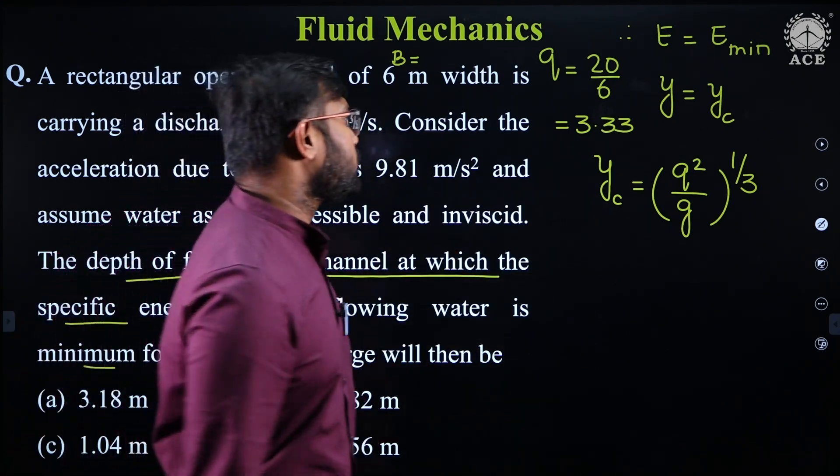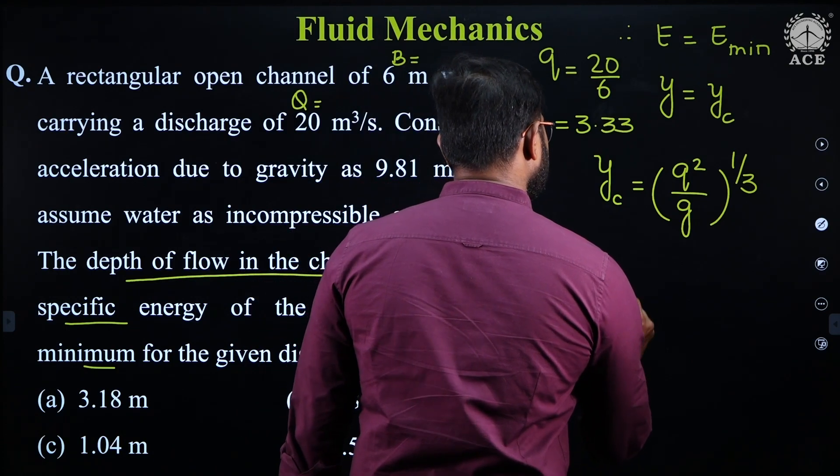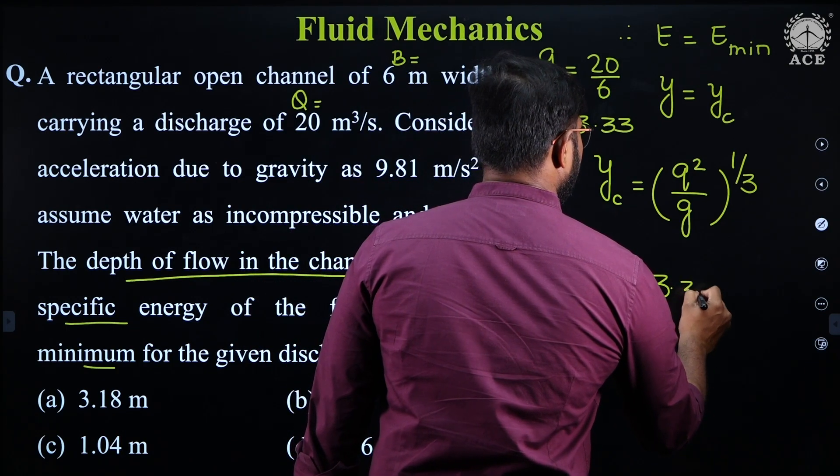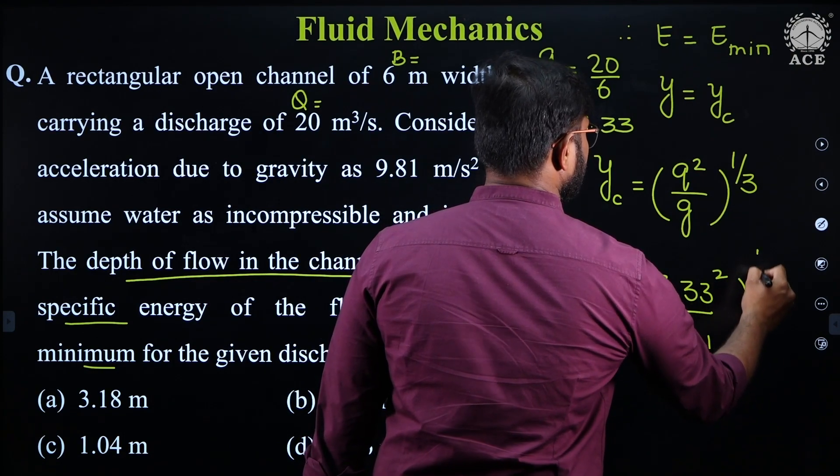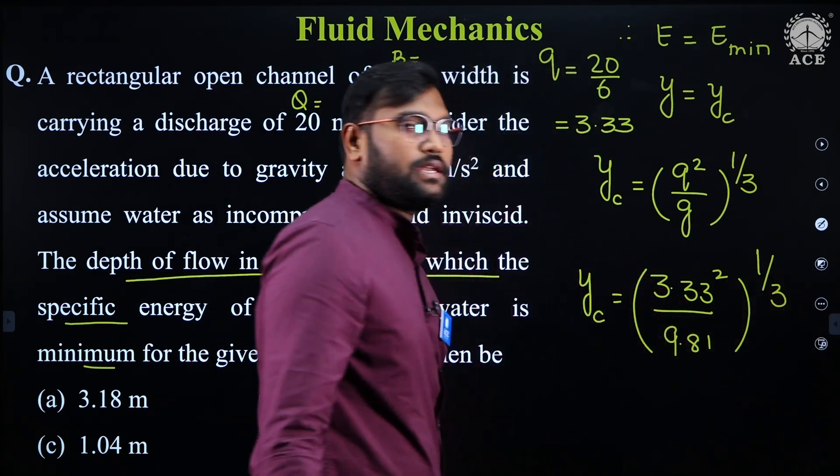Now simply you substitute over here. So yc is equals to 3.33 square by 9.81, whole to the power of 1 by 3.